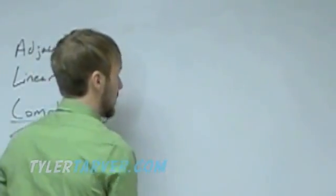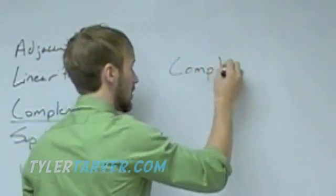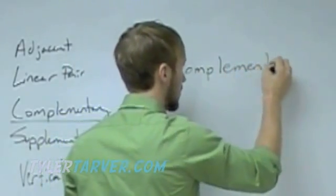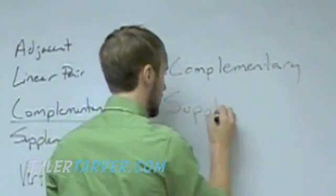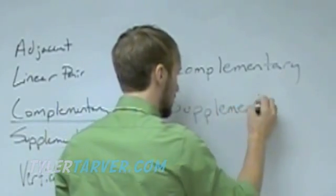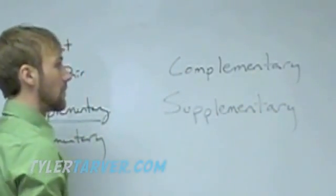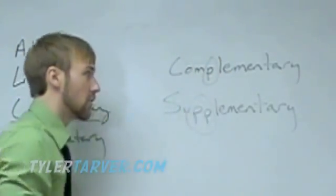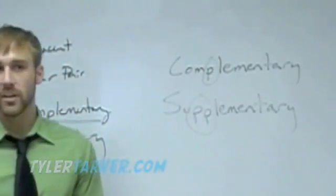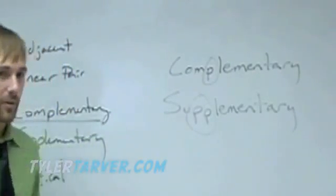One other way people like to remember it, and then we'll move on to the last thing. Complementary has one P, supplementary has two. Supplementary is twice as big as complementary. So 180 is twice as big as 90. That's another way people like to remember it.